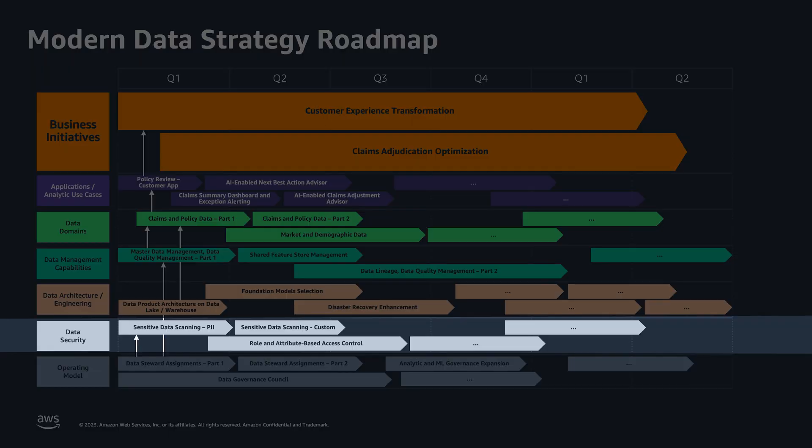Then data security — just because it's so crucial, we elevate it. At Amazon we call that 'job zero,' meaning it's so foundational and important that you have to think about it before everything else. So we give it its own track of work.